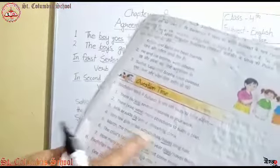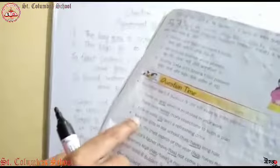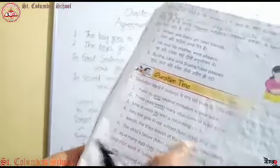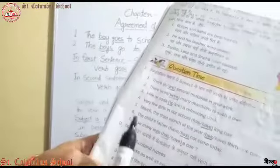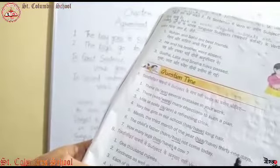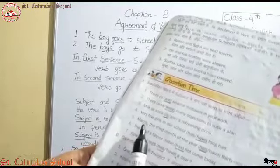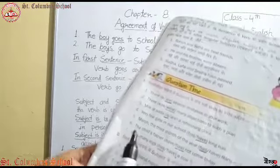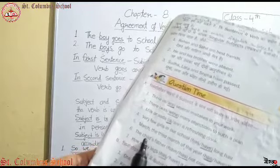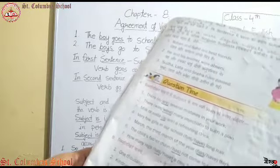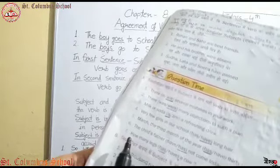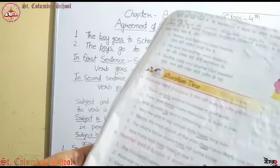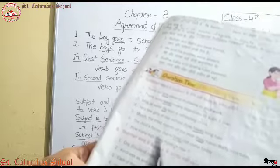'Very few girls in our school have long hair' - girls plural subject है तो have use हुआ, has नहीं। 'March, the third month of the year, has 31 days' - March singular है, तो has use हुआ। 'The child's father has not come today' - singular subject, so has। 'How many legs has a cow?' - cow singular है।